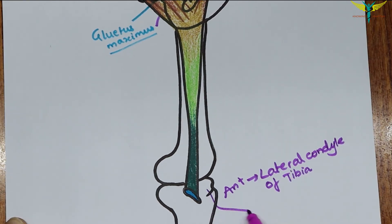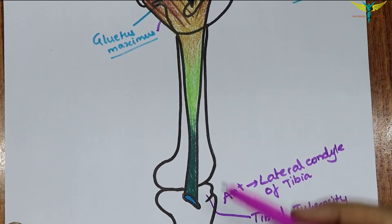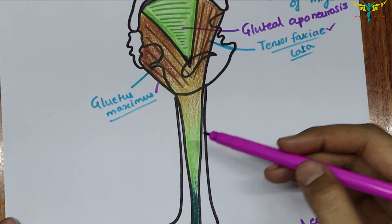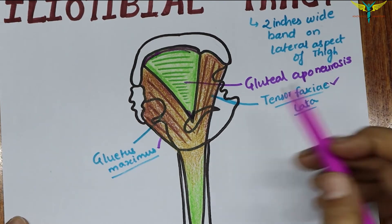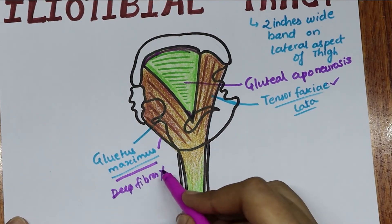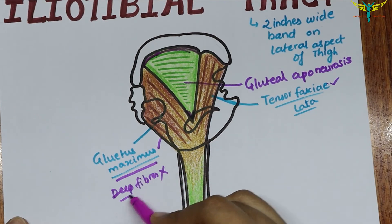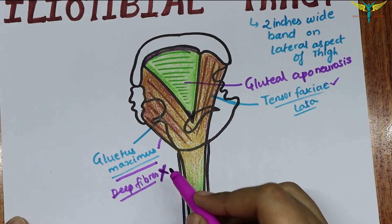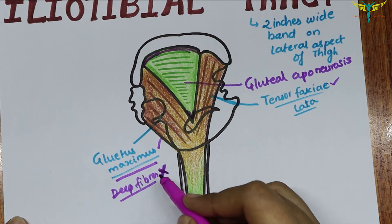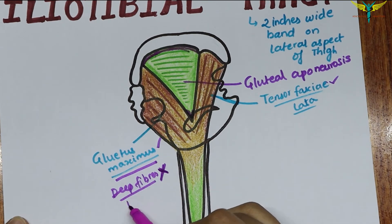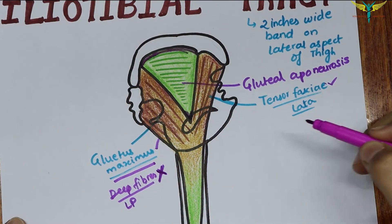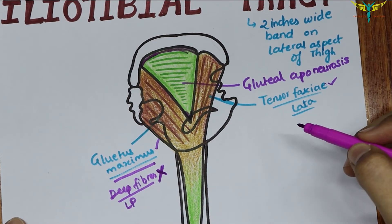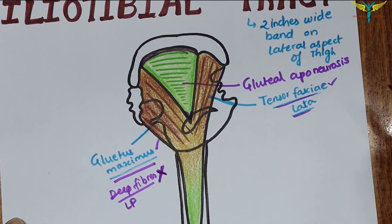The upper part of the iliotibial tract provides insertion to two muscles: the gluteus maximus, except for the deep fibers of its lower half, and the tensor fascia latae.